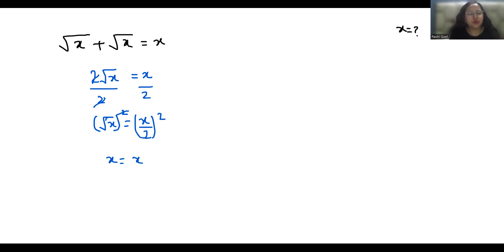This 4 goes to the other side. 4x = x² or we can write it as x² - 4x = 0. Now if I take x as common, x(x - 4) = 0.